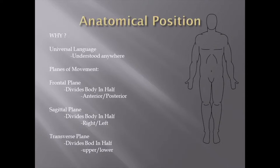Leonardo da Vinci made a very famous drawing of a man with his arms out to the side with a circle around it, and that was thought to be the first anatomical position drawing ever. It's interesting that even back in those days, the body was being thought of in the same way, and it hasn't changed — we still reference the body in similar characteristics.